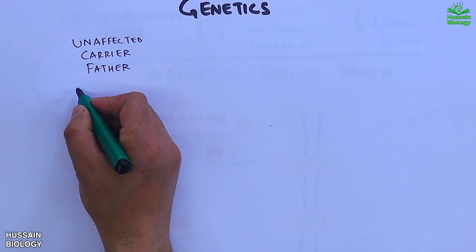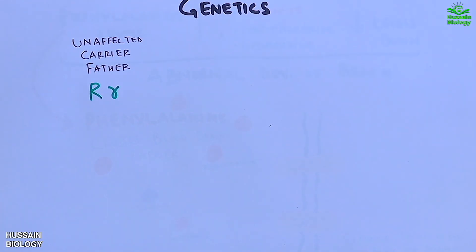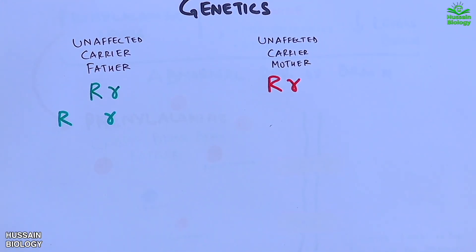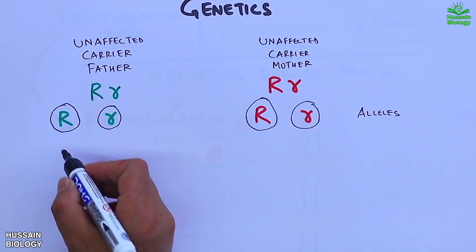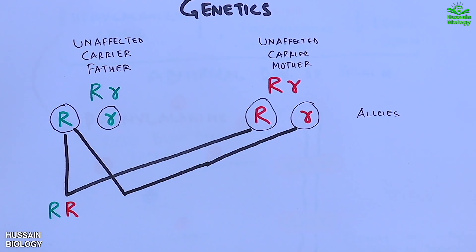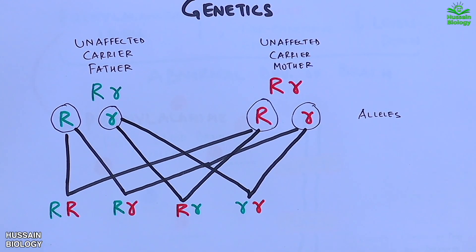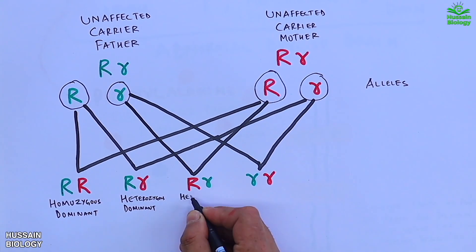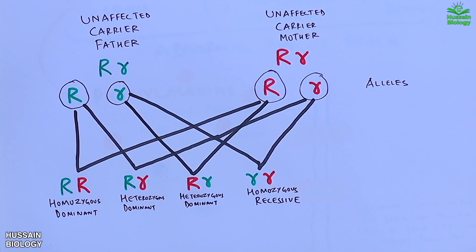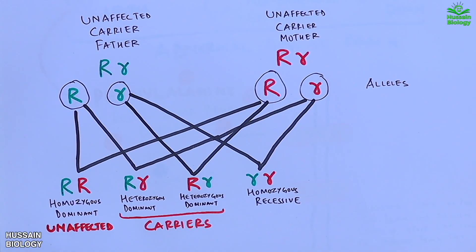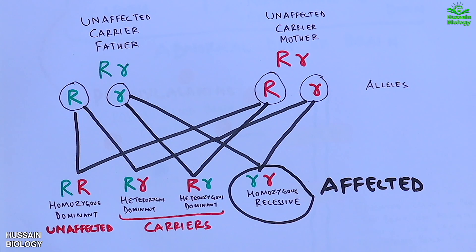Moving towards the genetics of phenylketonuria: an unaffected carrier father has capital R and small r alleles, and an unaffected carrier mother also has capital R and small r alleles. Upon crossing, we get four offspring: homozygous dominant (RR), two heterozygous carriers (Rr), and homozygous recessive (rr). The first is unaffected, the second and third are carriers like their parents, and the fourth is affected since both alleles are recessive.